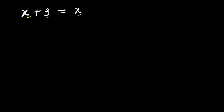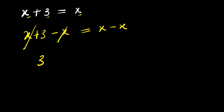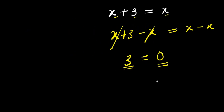Now, let's start with this particular method. What if I decide to subtract x from both parts of this equation? I'll have x plus 3 minus x equals x minus x. So x minus x cancel out, I have 3 here, and this equals x minus x, that is zero. So we have 3 here and we have 0 here, which do not actually tally. So that means this particular method is not correct.